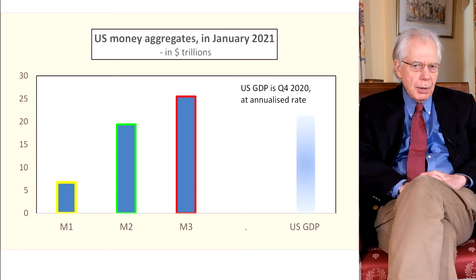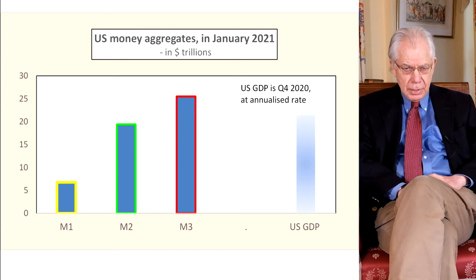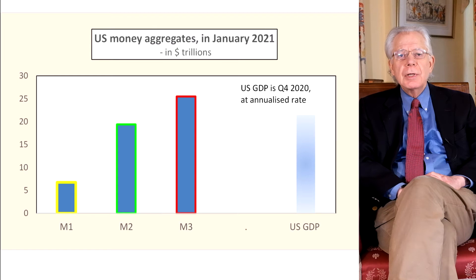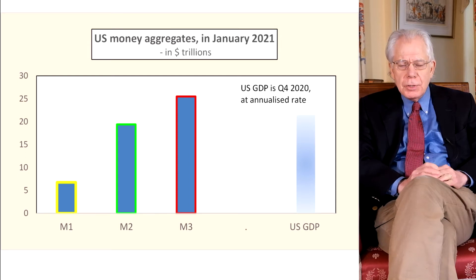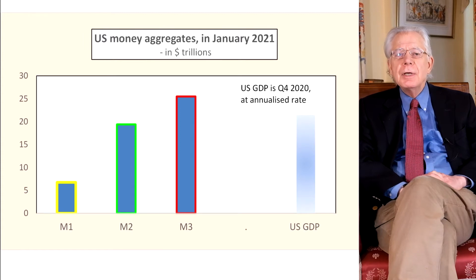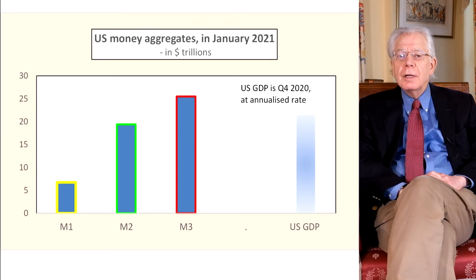I'm going to focus here on the American data. You can see the different sizes of M1, M2, and M3 and compare that with the level of national income. At the end of last year, GDP in America was a bit over 20 trillion dollars, and last month in January the quantity of money on the broad measures was about 25 trillion. On M1, much smaller — a bit under 7 trillion. So the different measures of money are very different in size.